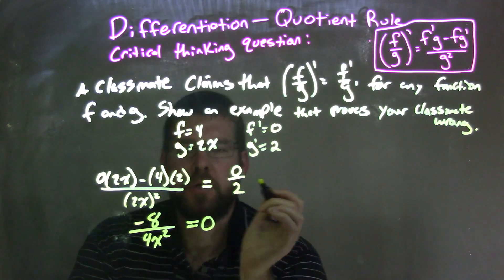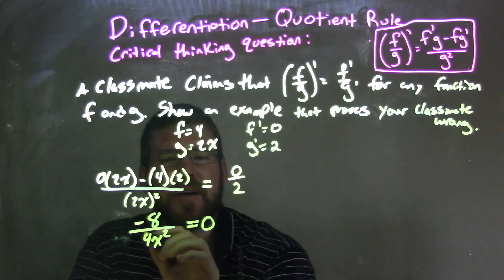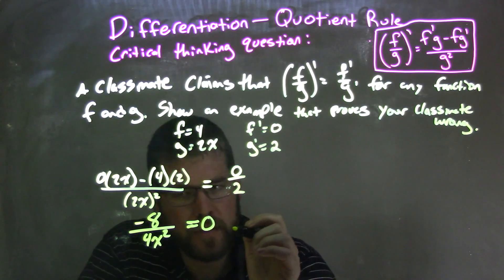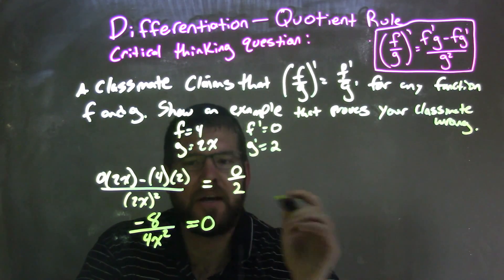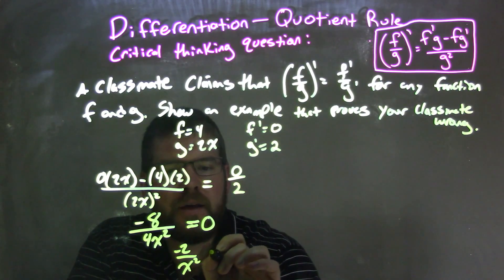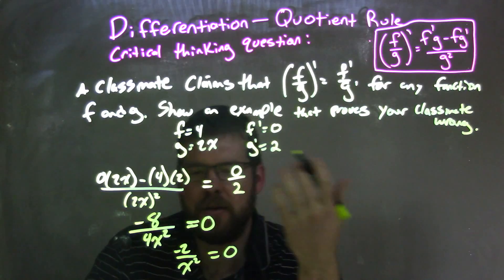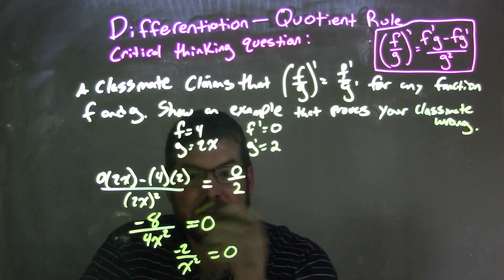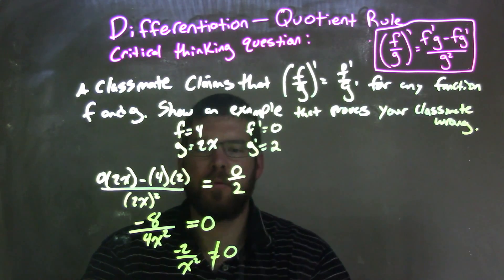Do they equal? No, they don't, right? Now we can simplify this one more if I really wanted to. 4 and 8, that's the same thing as like a negative 2 over x squared equals 0 if I want to simplify it. At this point, we really can clearly see that they're not equal, right? So they're not equal.